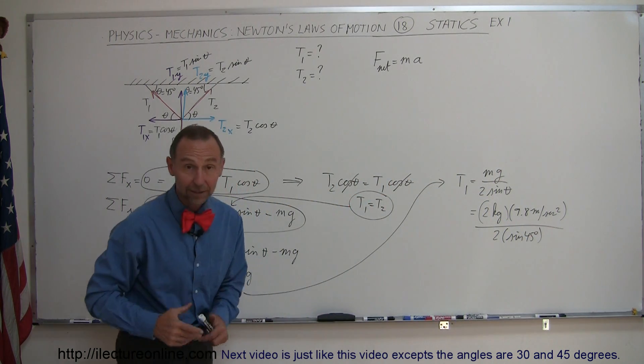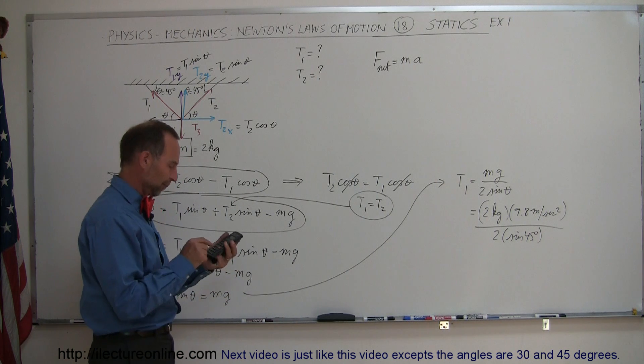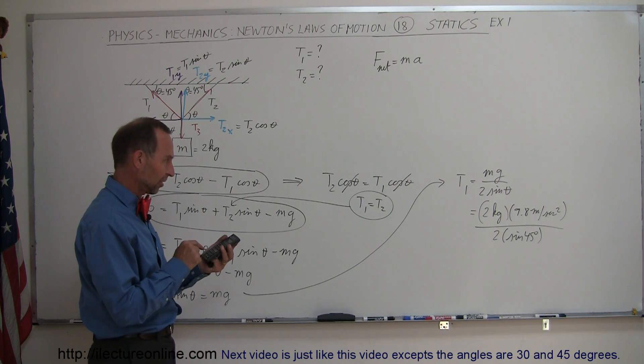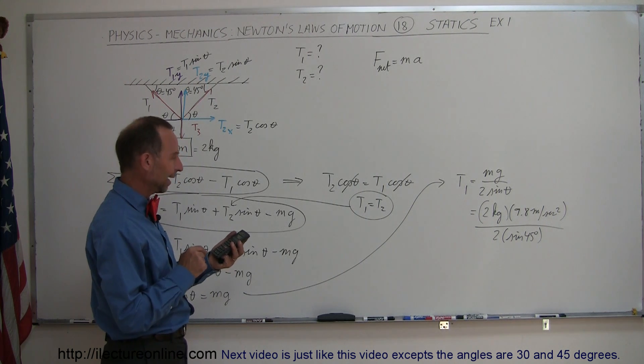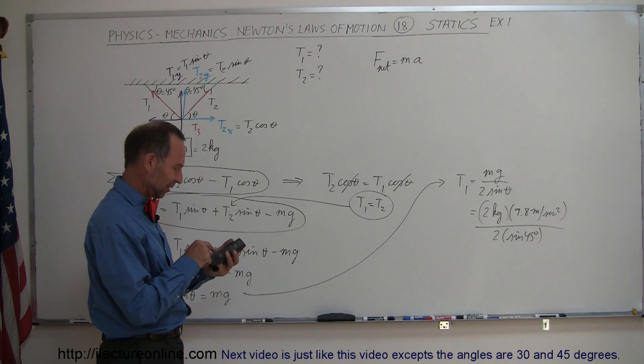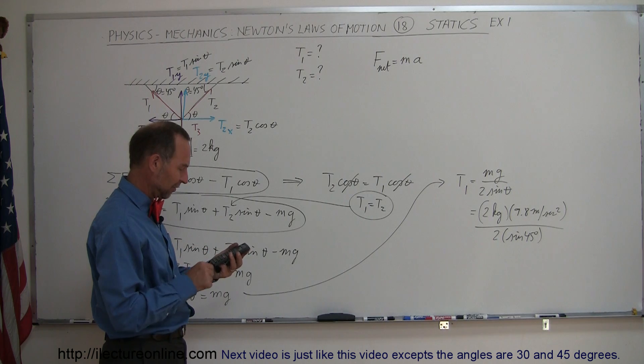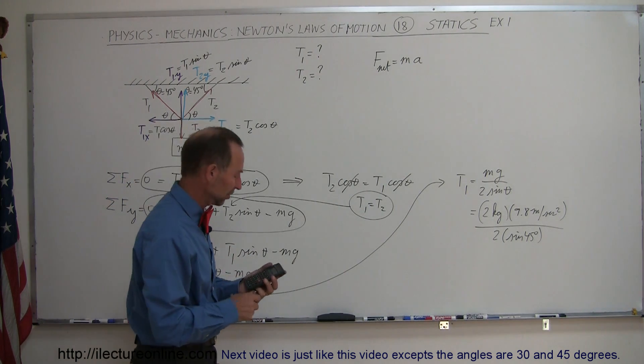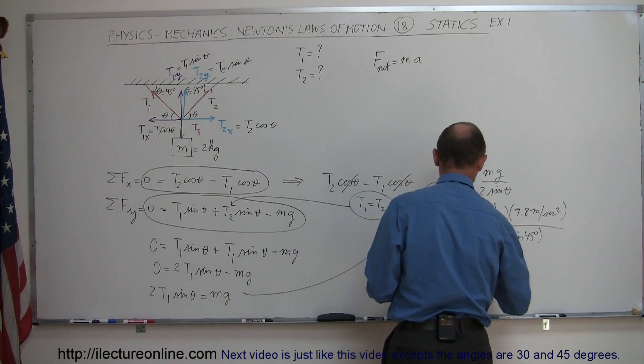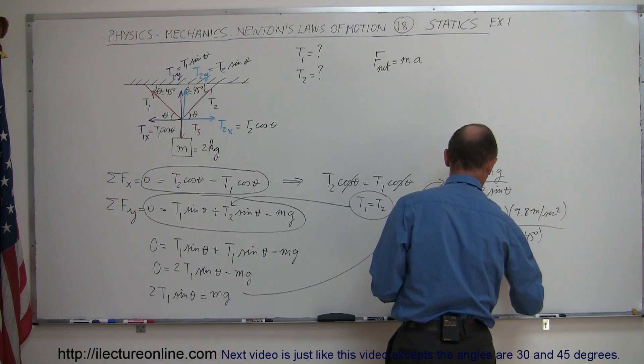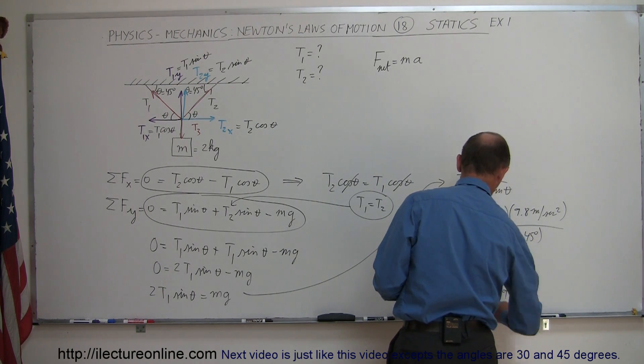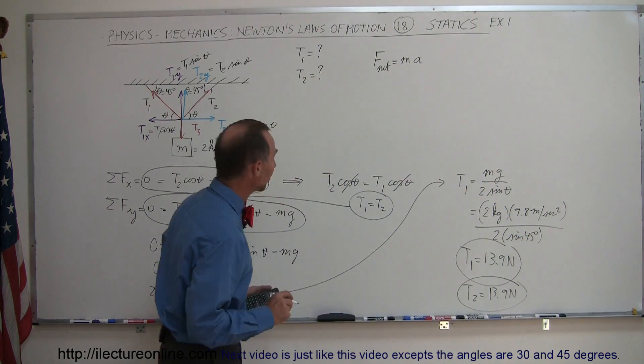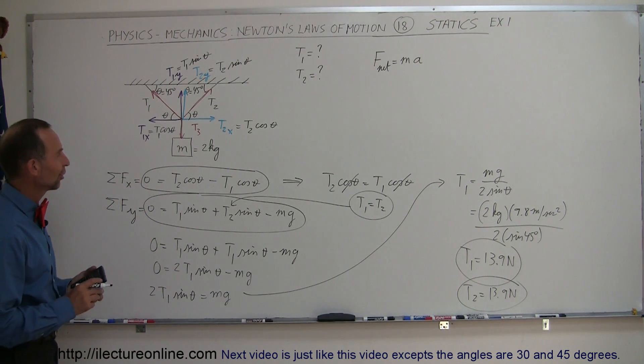And with a calculator, we can figure out what that's equal to. So we have 19.6 divided by 2—I could have simplified that—and divide by the sine of 45, and that would be 13.9 newtons. So T1 equals 13.9 newtons. Of course, that means T2 equals 13.9 newtons. And I think I just answered my question. That's the answer to this problem.